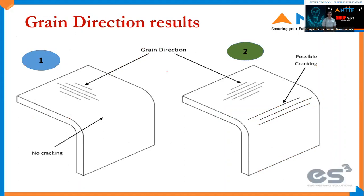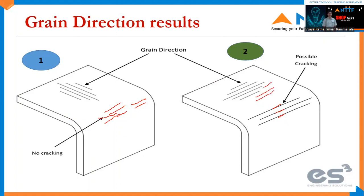Here we can observe two figures. In the first figure, the bending is done perpendicular to the Grain Direction. At the radius, we can observe there are no cracks — it has a plain surface without any cracks or breakages. But if we observe the second figure, we can see some cracks, because the bending was done parallel to the Grain Direction. That is why there are possibilities of cracks and breakages.